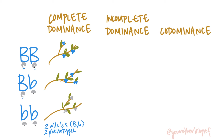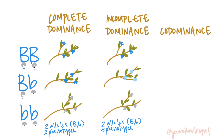It makes enough that we still see blue, but not that nice dark blue of the big B big B genotype. This would be incomplete dominance. With incomplete dominance, the phenotype of the heterozygote is more of a blend between the two homozygotes, or like a diluted version of the dominant phenotype.